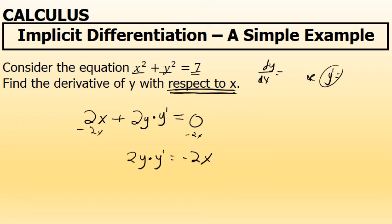And finally, we're now a step away from isolating y prime or writing the derivative in the form y prime equals. We'll simply divide both sides of the equation by 2y. And we have y prime equals negative 2x over 2y.